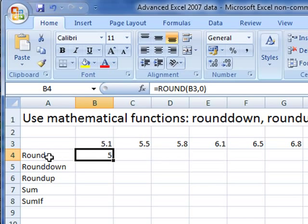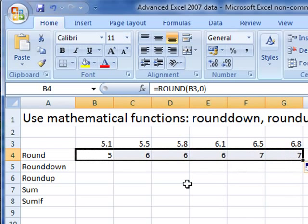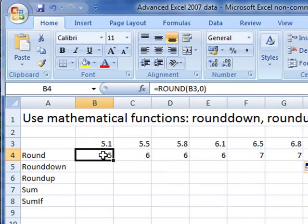So what round does, it takes the number in the cell and rounds it to the nearest whole number. So if I replicate that across to the rest of my numbers, we can see what happened. 5.1 has been rounded down to 5. 5.5 has been rounded up to 6.